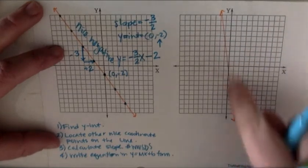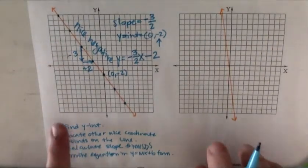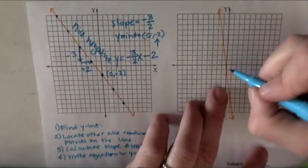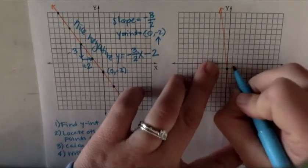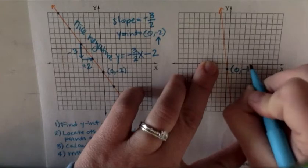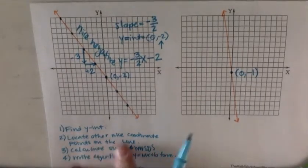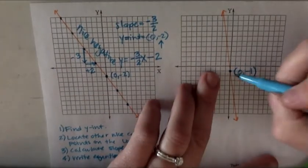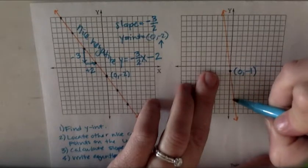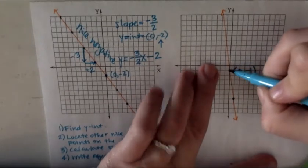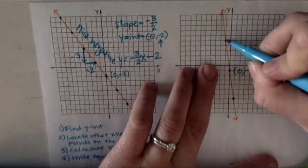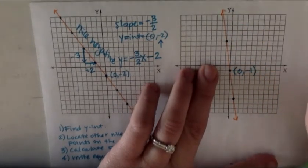Let's look at this next orange line. So first things first, find my y-intercept. Looks like it crosses the y-axis right there. That's at 0, negative 1. Then I need to locate other nice coordinate points on this line. So I'm going to follow this down until I find a nice coordinate pair right there. There's no more. Here's one. And again, no more in that direction.